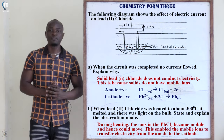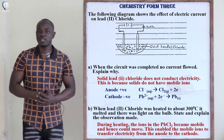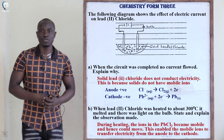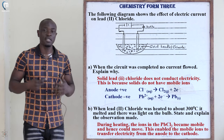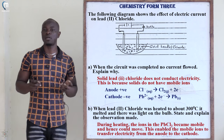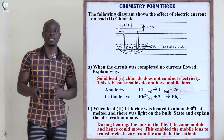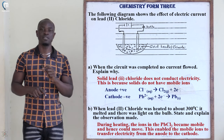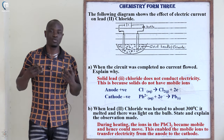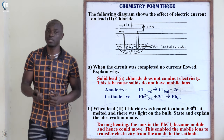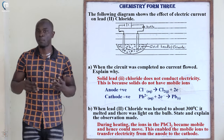Question four is about electrical charges studied in Form 2. The question shows the effect of electric current on lead(II) chloride — electricity passing through solid lead(II) chloride. We have not been told it is aqueous; it is in solid form. Ionic compounds do not conduct electricity in solid form.